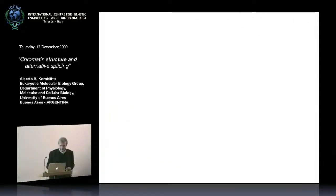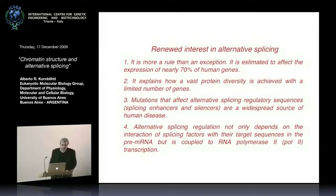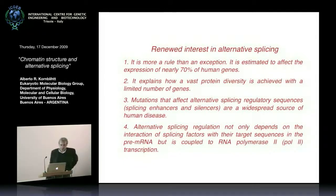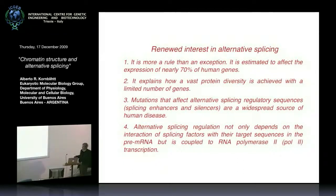I don't have to tell you very much about the basics of alternative splicing. I will say that there is a renewed interest in alternative splicing for many reasons. It's more a rule than an exception, estimated to affect nearly 70 to 80 percent of human and mammalian genes. It explains how vast protein diversity can be achieved with a limited number of genes. Mutations that affect splicing regulatory sequences — enhancers and silencers — are a widespread source of human disease.